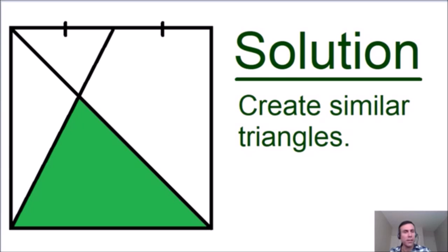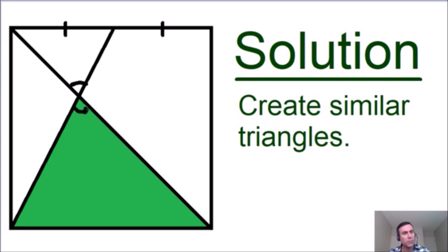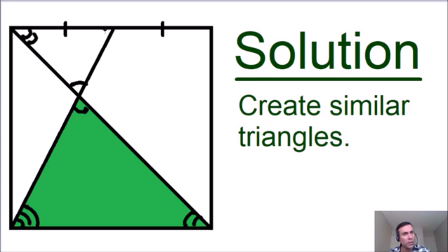It didn't take too much time to find the solution to this problem, and I thought the best solution was found by creating similar triangles. These two triangles right here are similar, and I'll show you why. These two angles are vertical, so we know that they're equal. This angle in the bottom right-hand corner is an alternate angle with this angle in this triangle, so they're equal. And this angle in the bottom left-hand corner is equal with this angle in the top right-hand corner of this triangle, because they're also alternate angles.